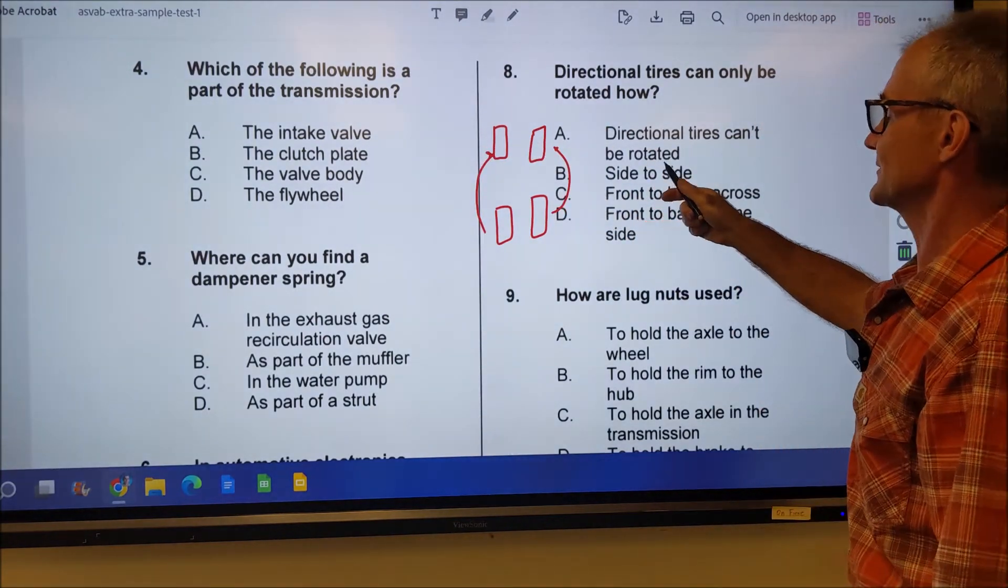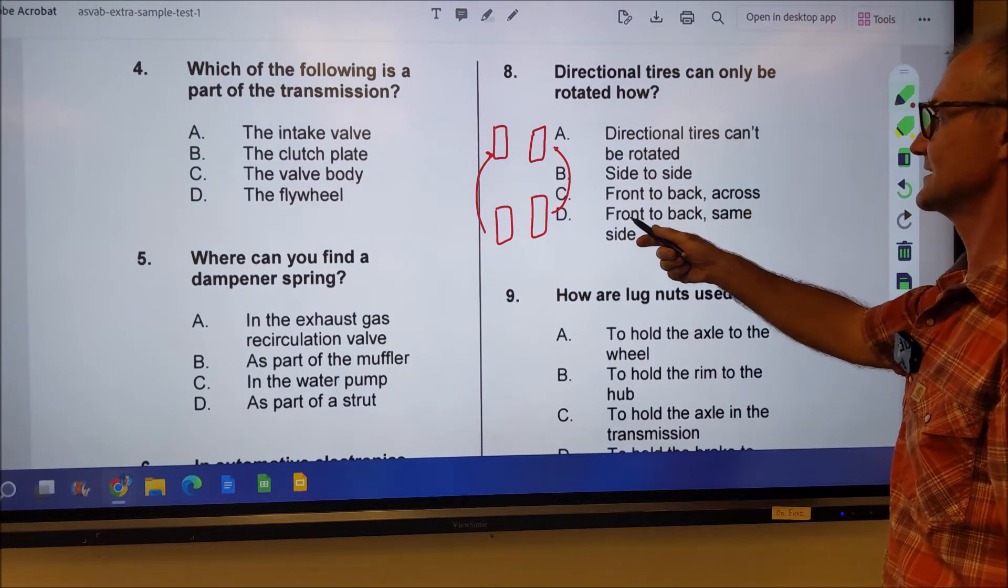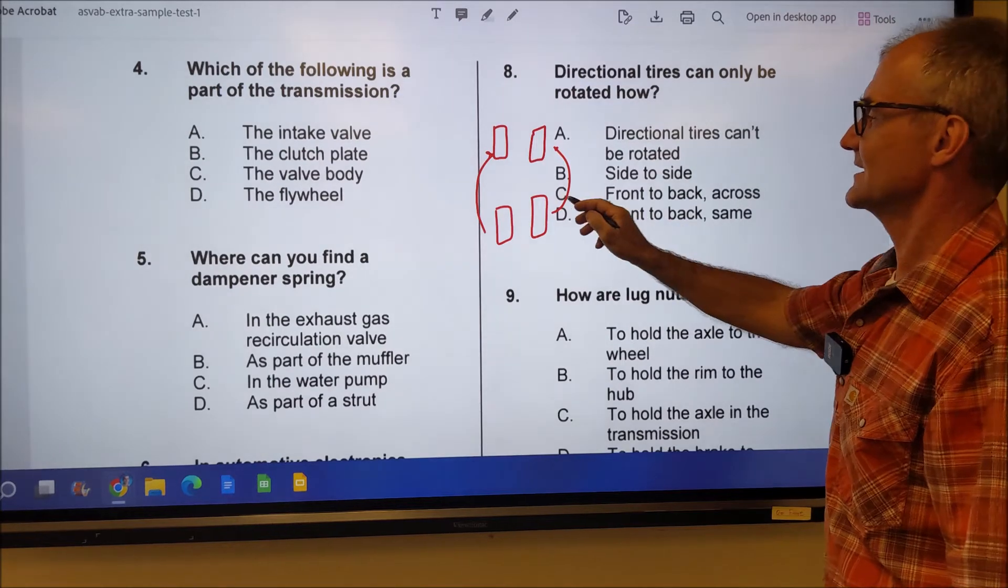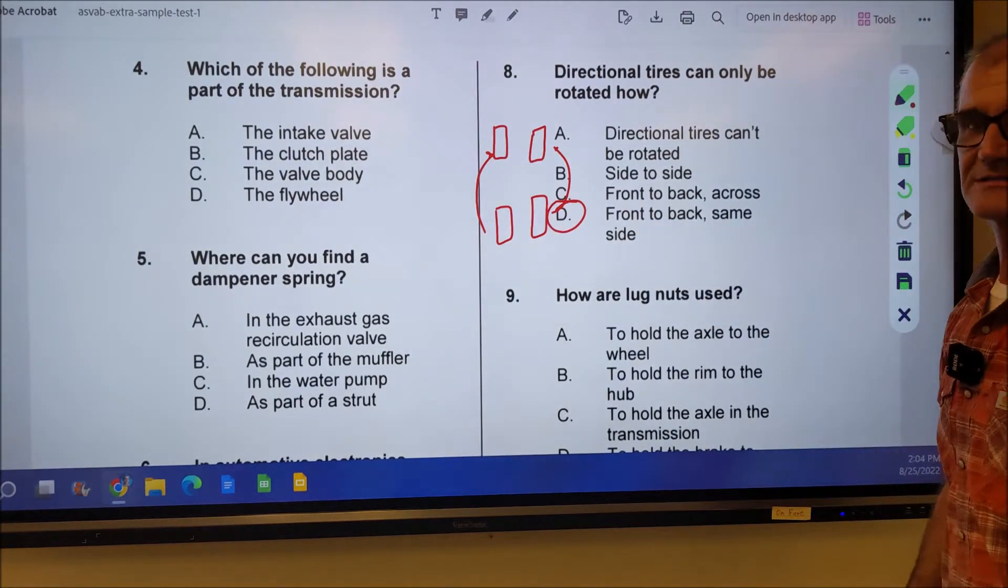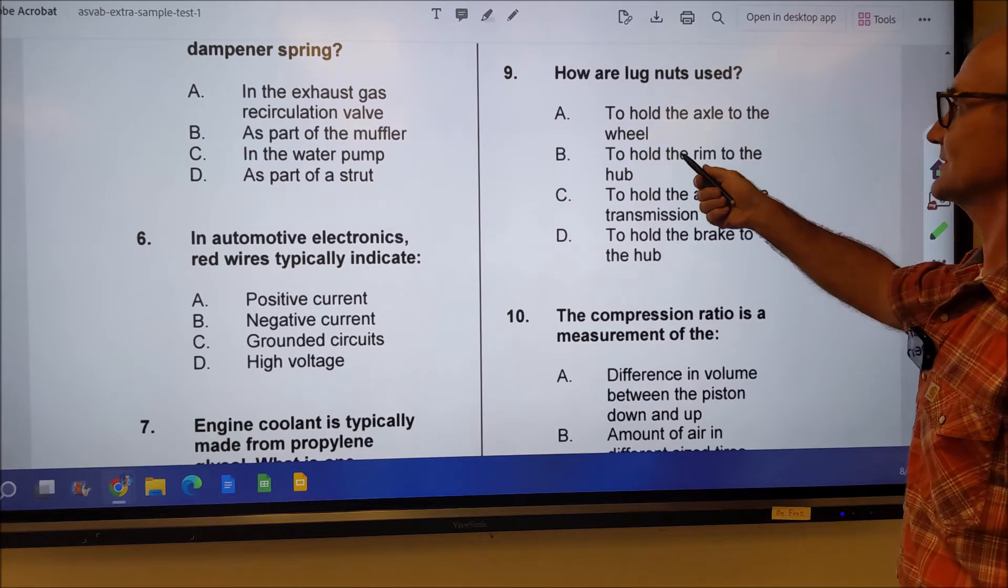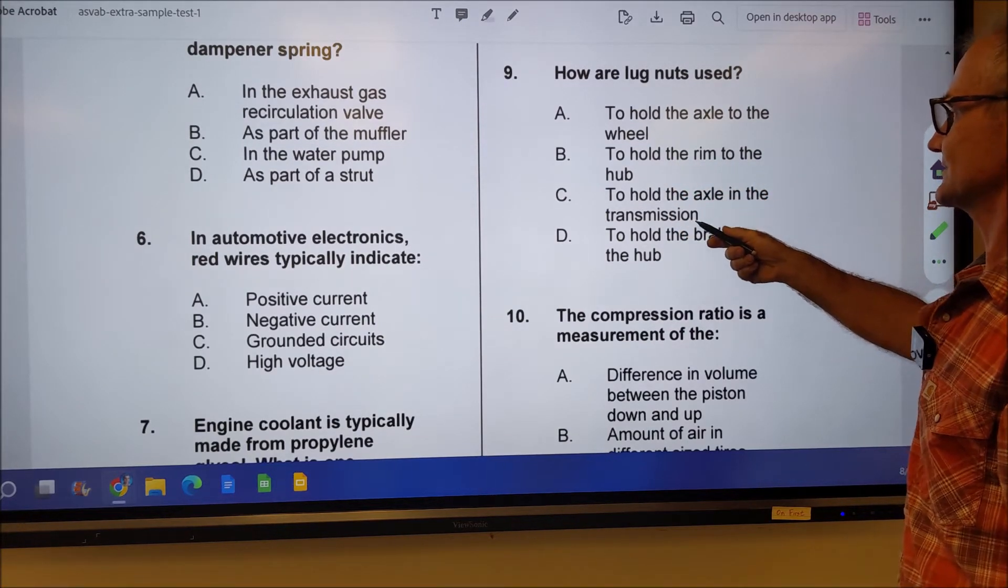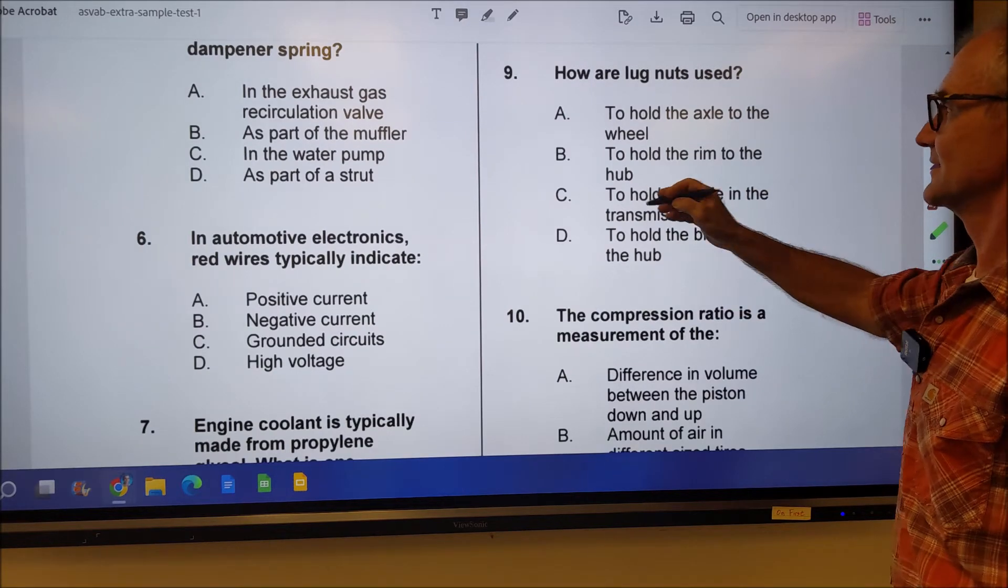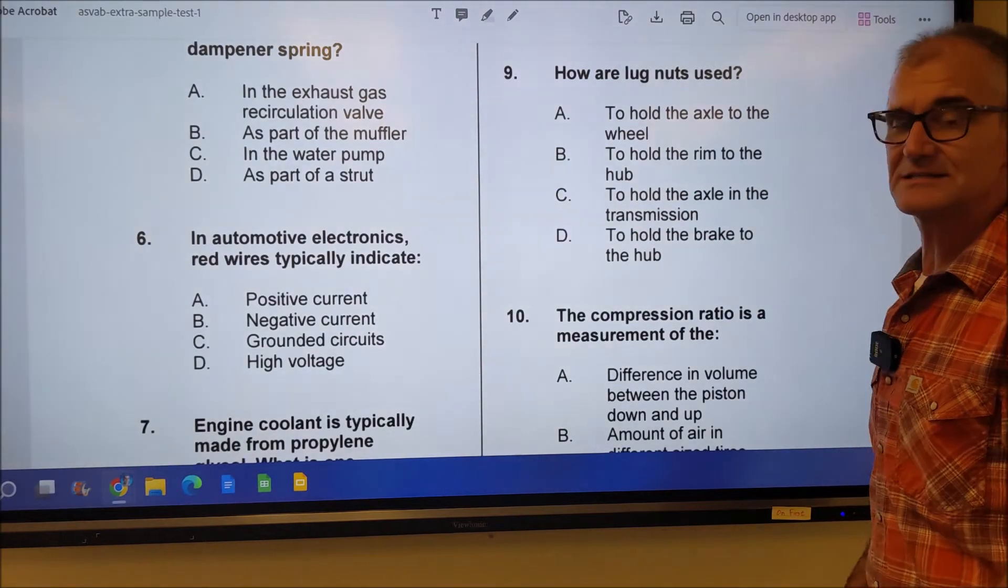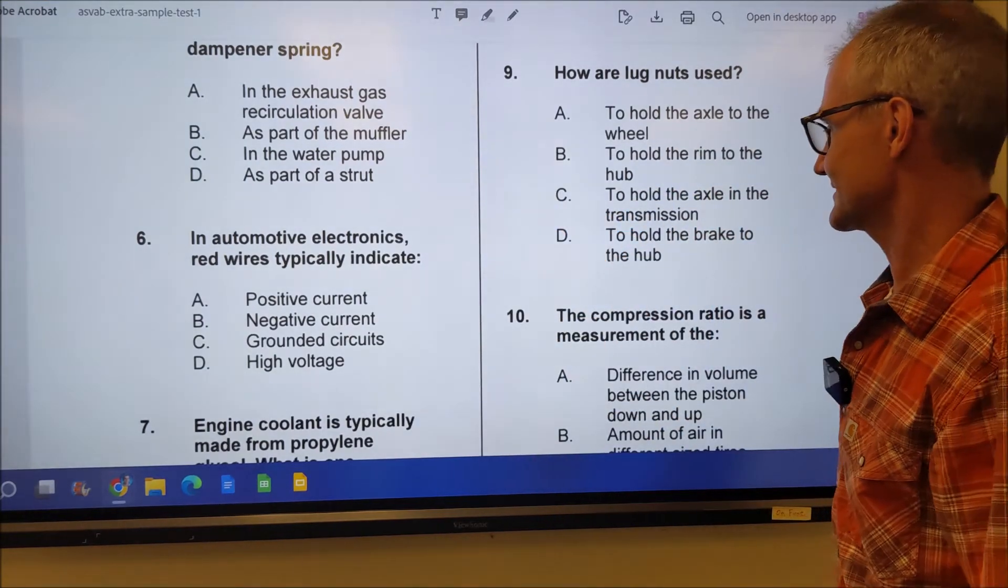So they can't be rotated. They could be side to side. Won't work. Front to back. Across. That doesn't make sense. Front to back same side. Answer D. That's the only one that makes sense there. How are lug nuts used? To hold the axle to the wheel. To hold the rim to the hub. To hold the axle in the transmission. To hold the brake in the hub. Answer B is the only one that makes sense. It's designed to hold the rim onto the hub so the wheel doesn't come off.